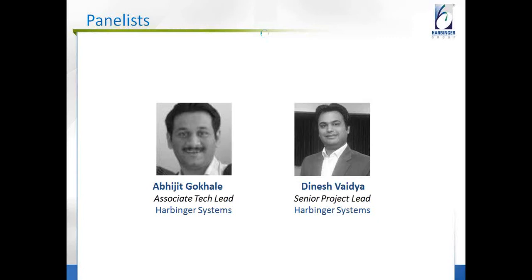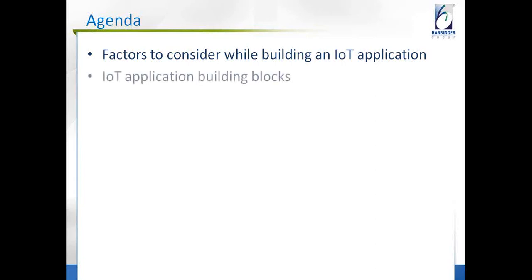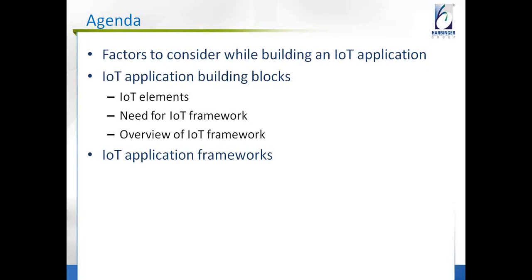Our agenda for today is pretty simple. We will start our discussion with factors to consider while building an Internet of Things application — factors like scalability, security, privacy, and concurrency. The next thing we would see is the basic building blocks for any IoT application. After that, we will turn our attention towards the need for having an application framework for Internet of Things, and answer some questions along the way.